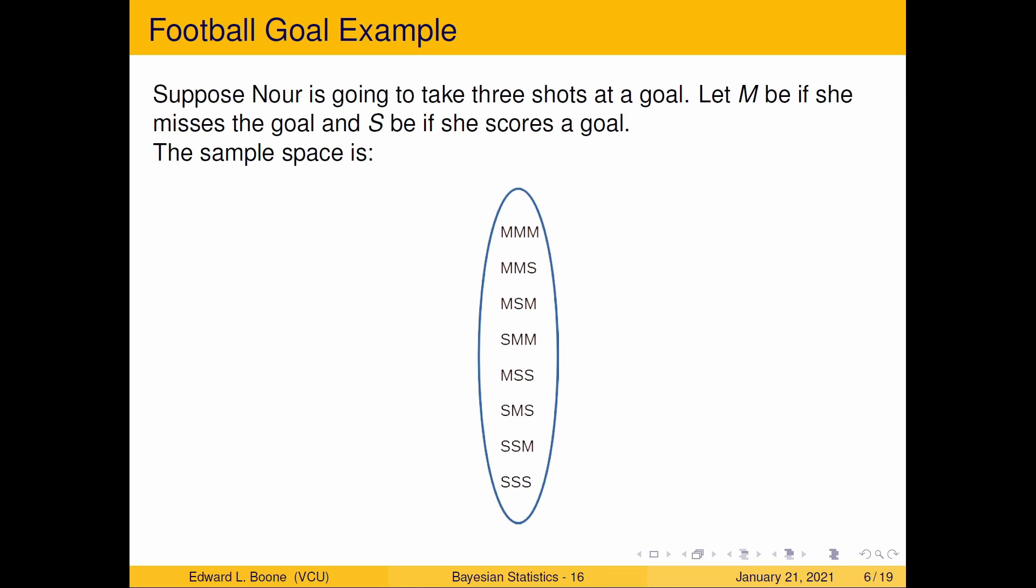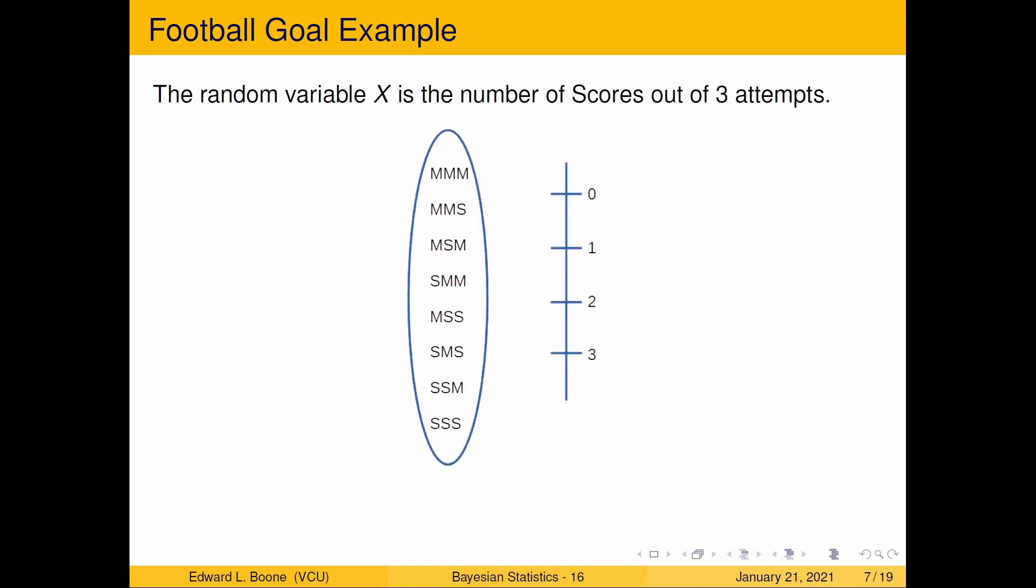Now what we're going to do is we're going to take these and we're going to map them to the real line. So I've made a real line here and I made my random variable the number of scores out of three attempts. Well, how many could there be? There's only three attempts so that at most there could be three scores. And since there's only three attempts, the least number of scores would be zero. You could make none of them.